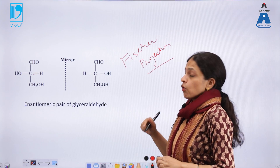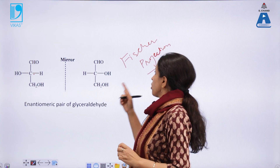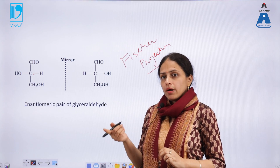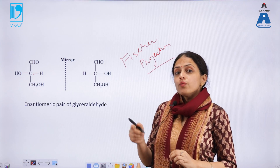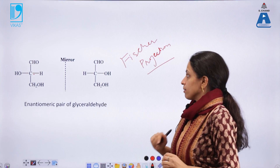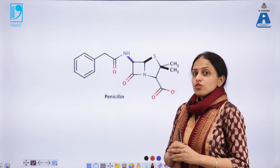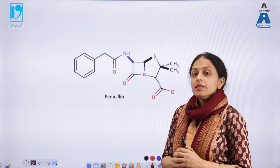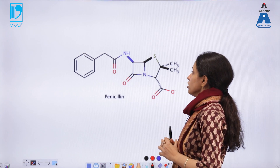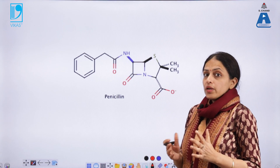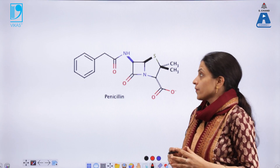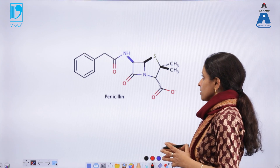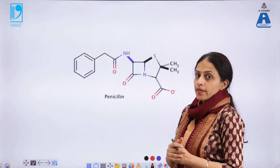Fischer projections of carbohydrates are discussed in detail in another lecture by S-Chant Academy. At the beginning, I asked you a question about how many chiral centers are in penicillin, which is a broad-spectrum antibiotic. Now, since we know how to define chiral molecules, we can easily say that penicillin is optically active because it has a few sets of chiral atoms.